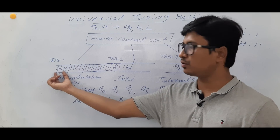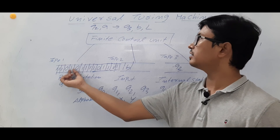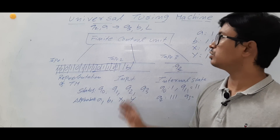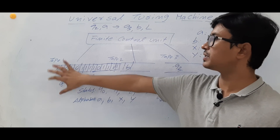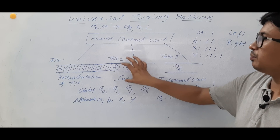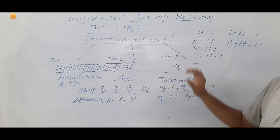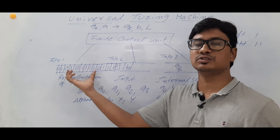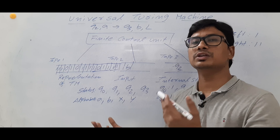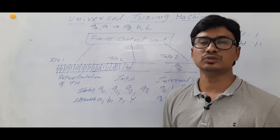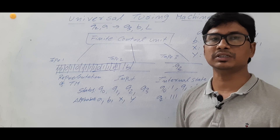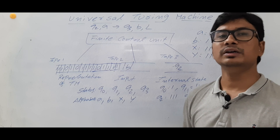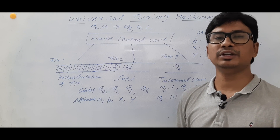So we encode each operation: states are encoded, alphabets are encoded, left and right moves are also encoded, and each component is separated by a delimiter zero. This way we can represent a complete Turing Machine in a tape. So if you have a finite control unit, a representation of a Turing Machine in tape one, the input in tape two, and the internal state in tape three, that is a Universal Turing Machine.